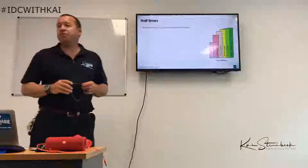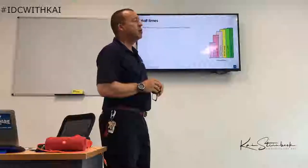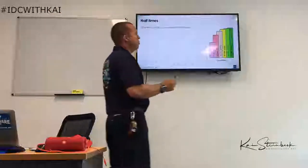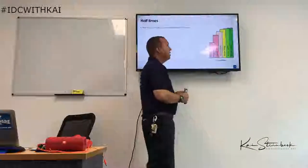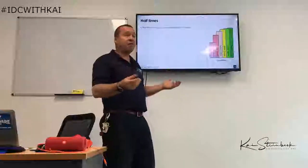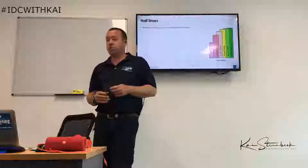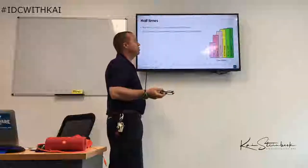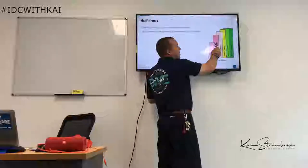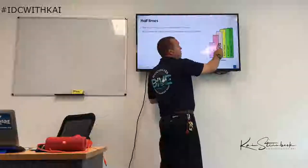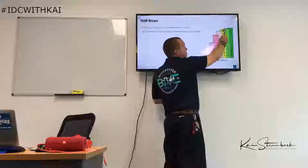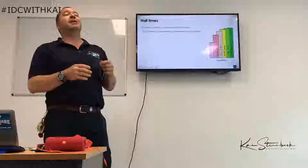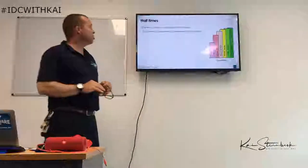Half times is the time in minutes for a compartment to fill halfway. If a tissue compartment has a five-minute half time, in five minutes it is half full. At six half times the compartment is considered full, because in each successive five minutes it fills half again — eventually reaching 98.4% full after six half times. So at six half times, a compartment is considered full.